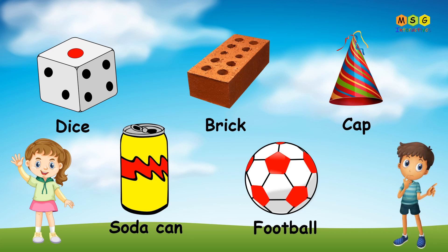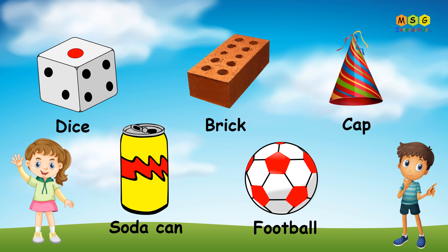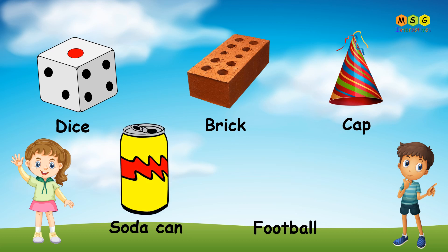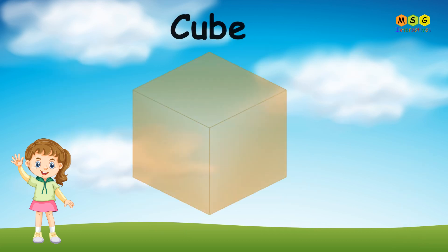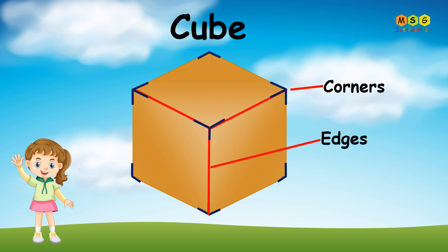The dice looks like a cube. The brick looks like a cuboid. The cap looks like a cone. The soda can looks like a cylinder. The football looks like a sphere.